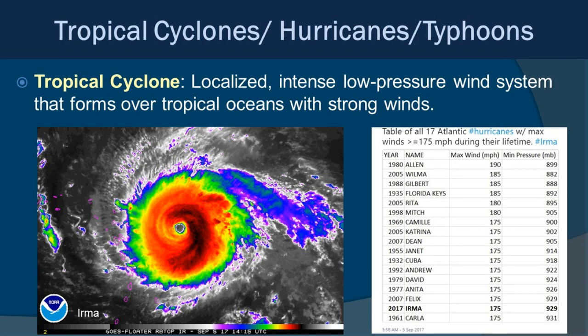Our next and final topic has to do with tropical cyclones, otherwise known as hurricanes or typhoons. Essentially, all three names mean the same thing — it really just depends on what part of the ocean you're in. They are localized, intense, low-pressure wind systems that form over tropical oceans with strong winds. We can rank these storms based on their maximum sustained winds — think about 175 to 180-mile-an-hour winds for very strong Category 5 storms.